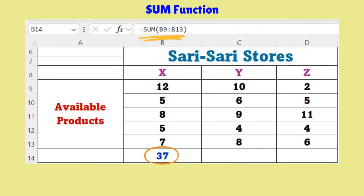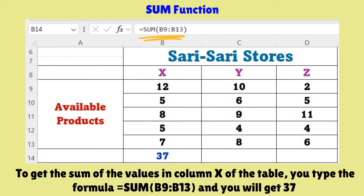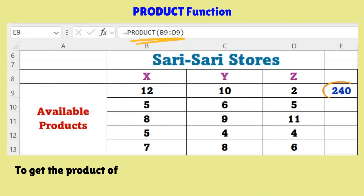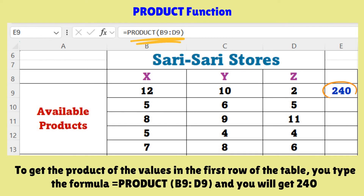Here is the sample data of prices of three sari-sari stores and the available products. You may copy the sample values in your worksheet to try the functions. For the SUM function, to get the sum of the values in column B of the table, you type the formula =SUM(B9:B13), and you will get 37. For the PRODUCT function, to get the product of the values in the first row, you type =PRODUCT(B9:D9), and you will get 240.